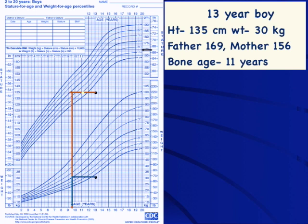Do you think this child really requires extensive evaluation? Often in this situation, people work up for routine causes with CBC, SGPT, creatinine, thyroid, celiac disease — everything normal — and then advise a growth hormone stimulation test. But I would say in a child presenting around 13 years of age with slightly delayed bone age, mild growth failure, and no pubertal development, 99 out of 100 of these children would actually have constitutional delay of puberty and growth, not growth hormone deficiency. If we do not do a primed growth hormone stimulation test, we may falsely diagnose them as GH deficient, because unless they are exposed to testosterone, they would not produce sufficient growth hormone.